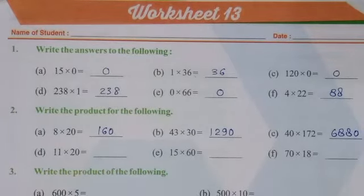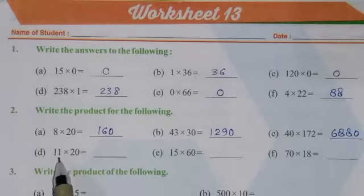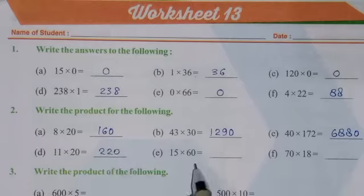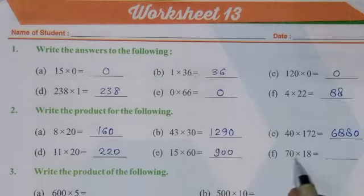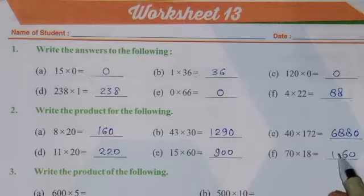Similarly we have to solve the remaining questions. If we multiply these two numbers, then you will get the answer 220. On multiplying these two numbers, you will get the answer 900. And on multiplying these two numbers, you will get the answer 1260.